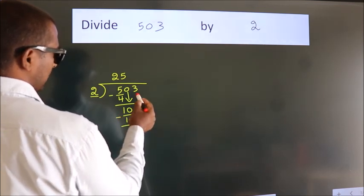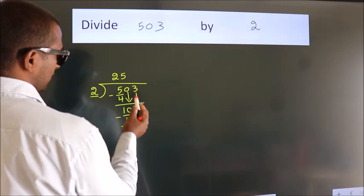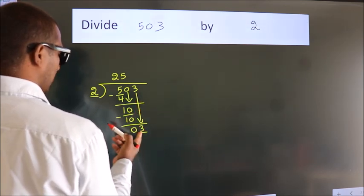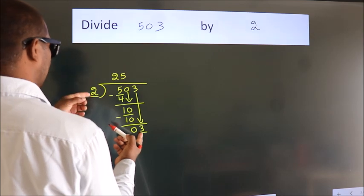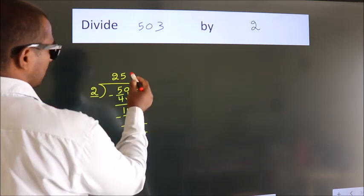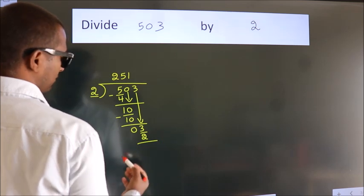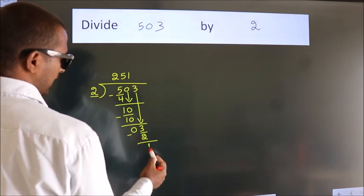After this, bring down the beside number. So 3 down. So 3. A number close to 3 in 2 table is 2 1s, 2. Now we subtract. We get 1.